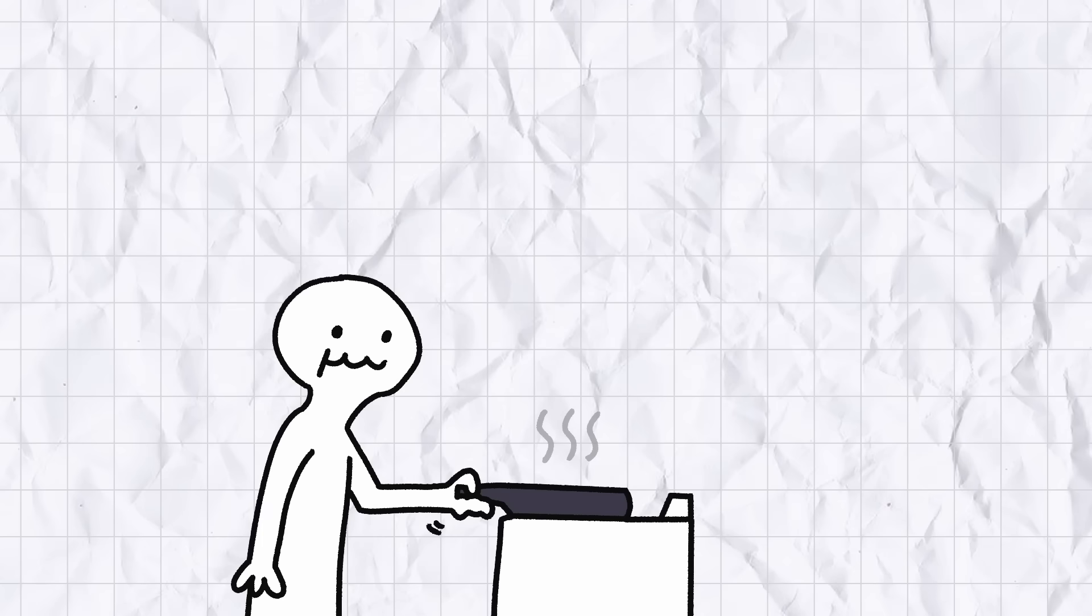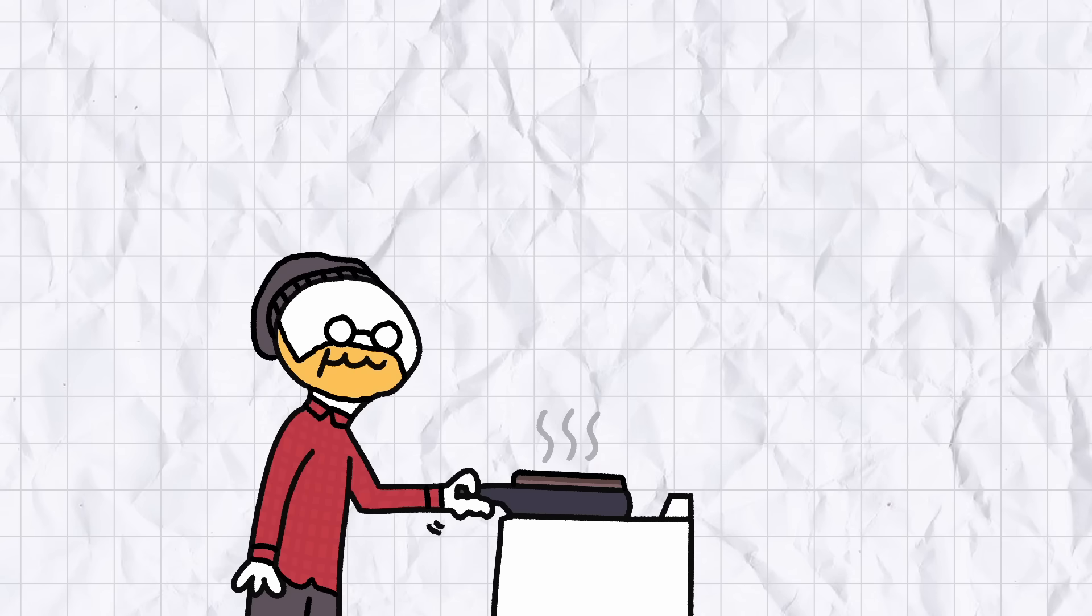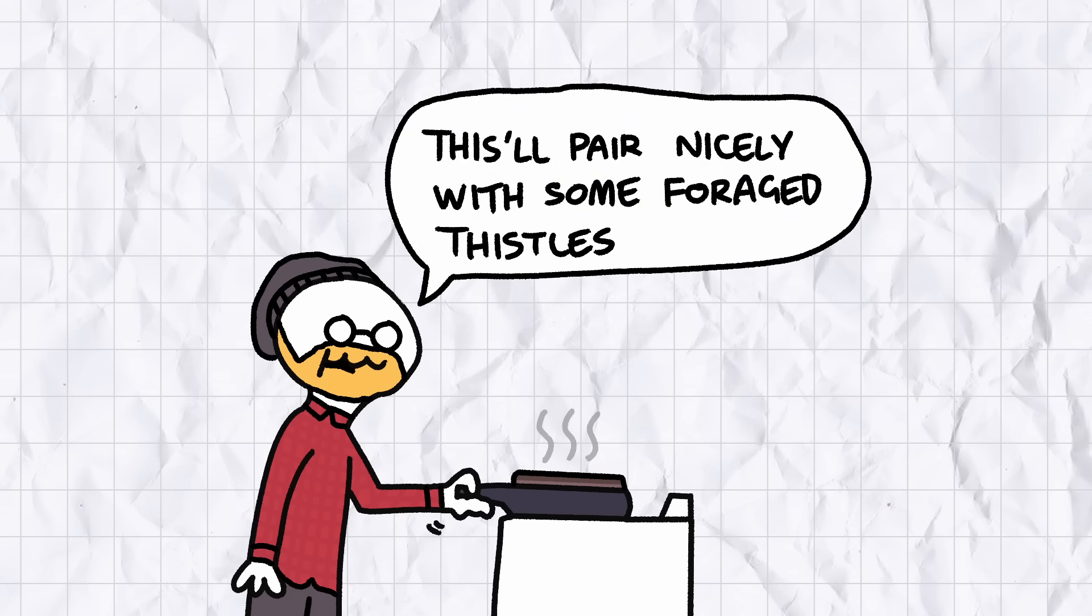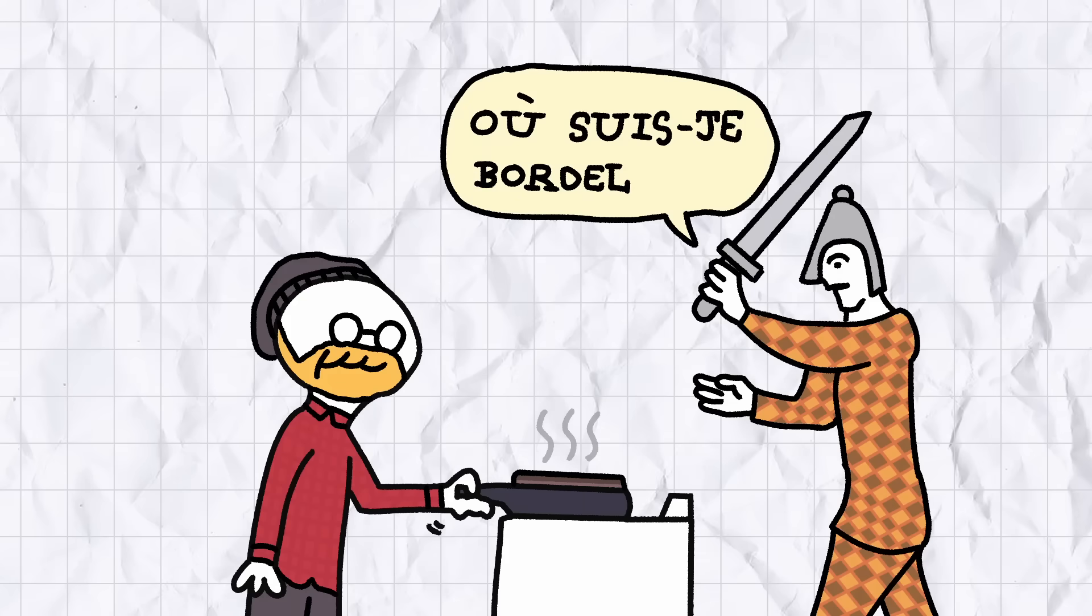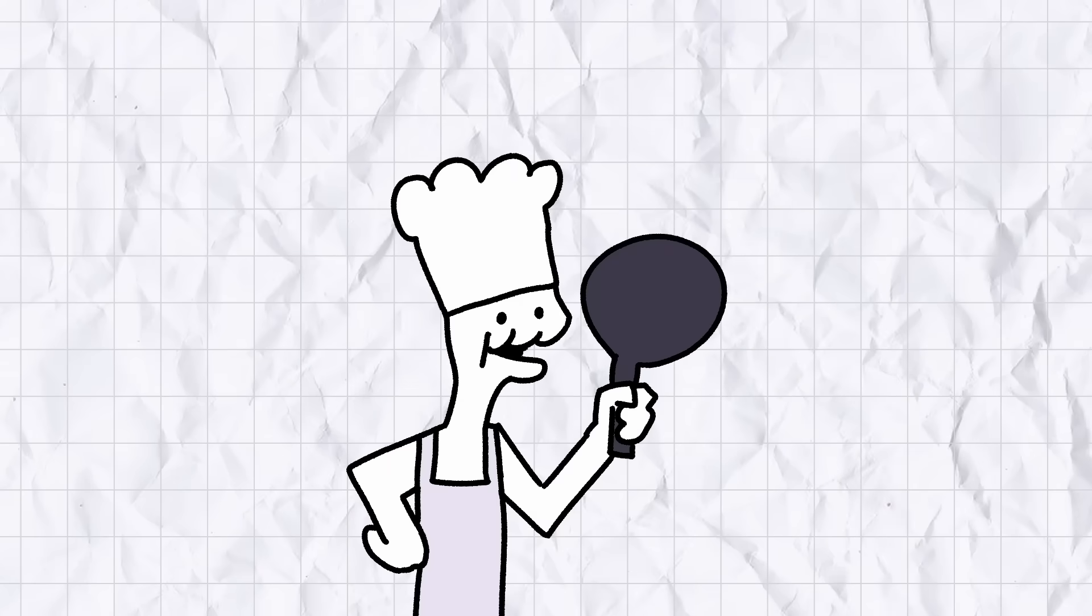Cast iron pans hold heat well, making them particularly useful for searing meat. Nowadays they have a reputation as being a bit bougie, tainted by association with men in their 20s that spend a bit too much time on cooking subreddits, but there's a reason people were using these things before the Norman invasion of England.